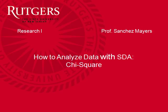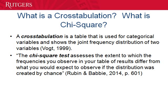SDA is the Survey Documentation and Analysis program found on the General Social Survey website, which we'll be using. Before we begin, let's talk about some terms. A cross-tabulation is a table used for categorical variables that shows the joint frequency distribution of two variables — also called a cross-tab or contingency table. The chi-square test assesses the extent to which observed frequencies differ from what we'd expect if the distribution was created by chance. It's used for nominal or ordinal level data, which is most of the data in the GSS.